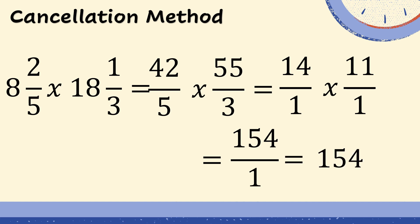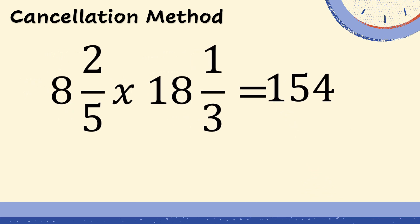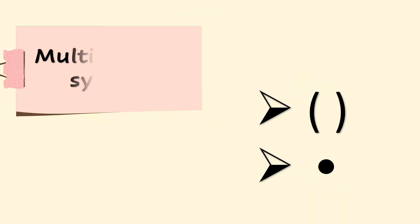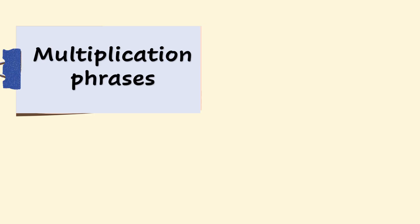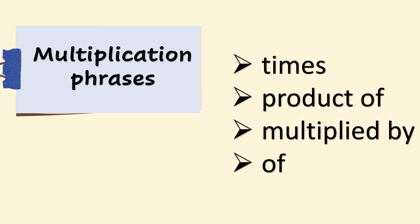Always remember that any fraction with a denominator of one will be considered as a whole number, just by removing the denominator one. Aside from the symbol ×, we can also use two different symbols to indicate multiplication. You can also use multiplication phrases: times, product of, multiplied by, and of.